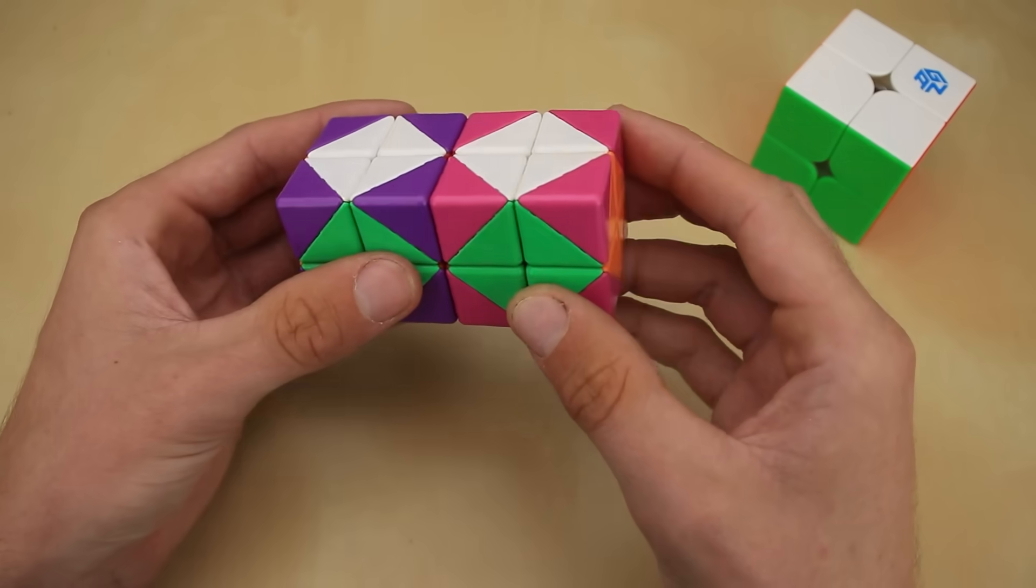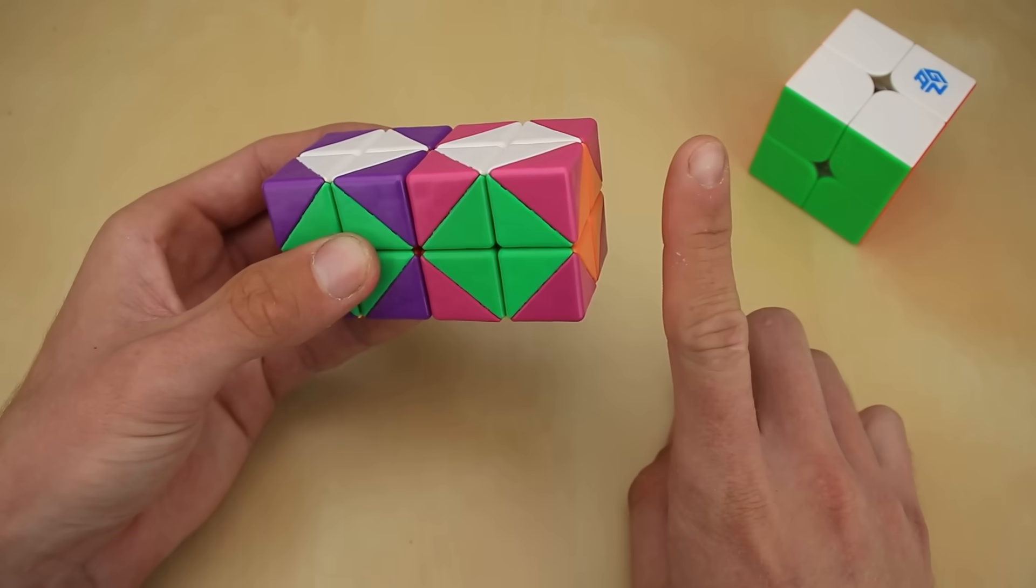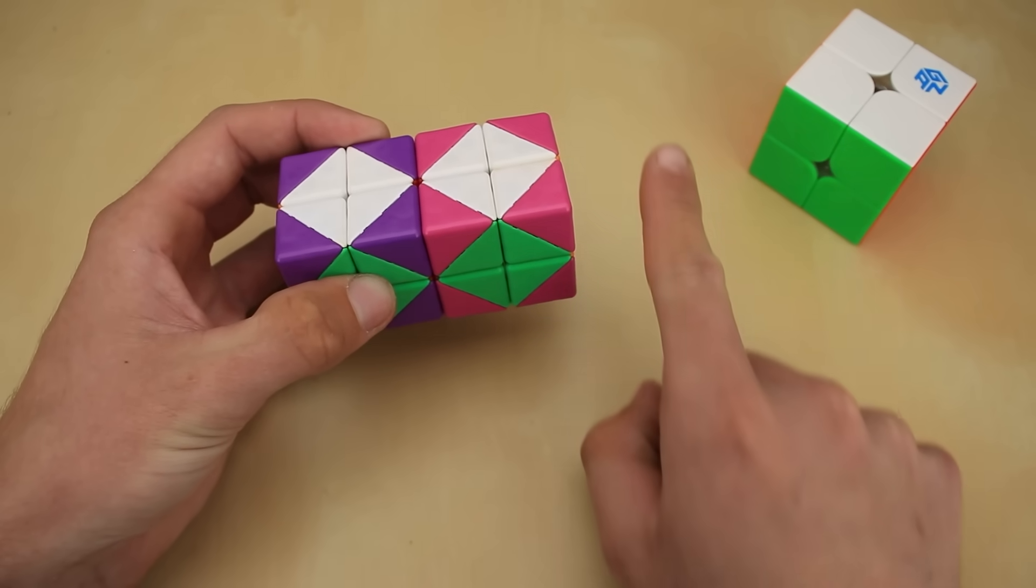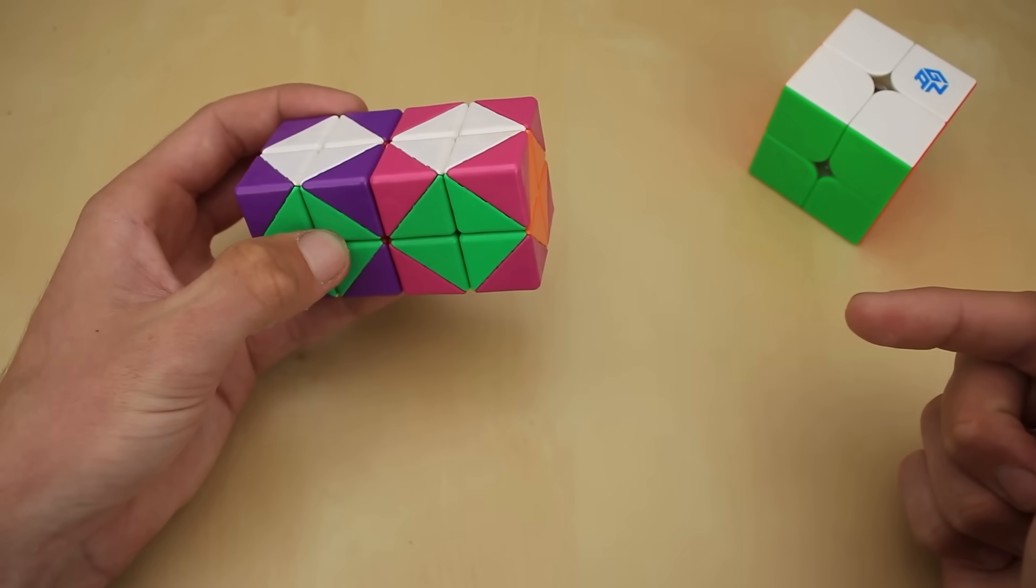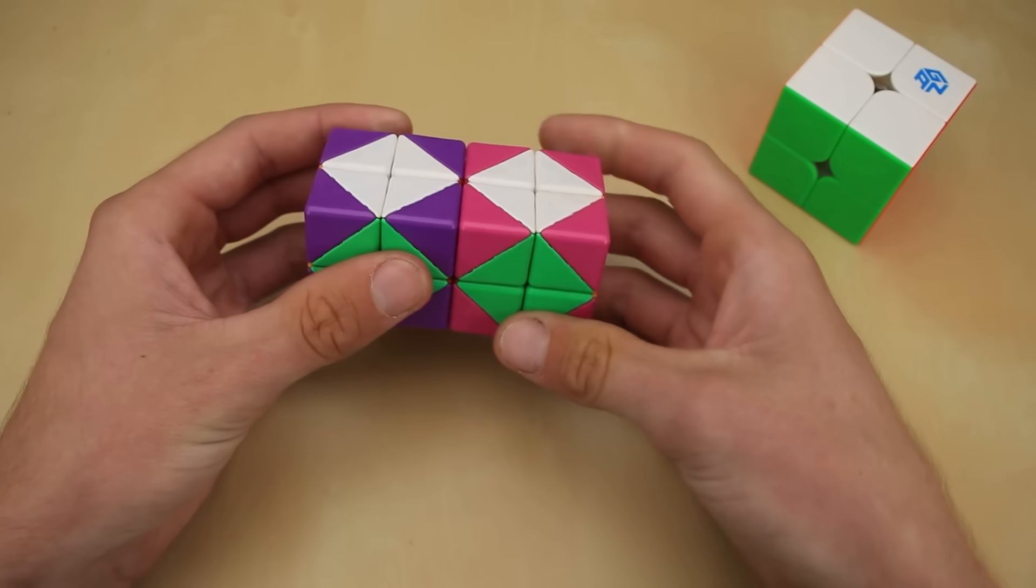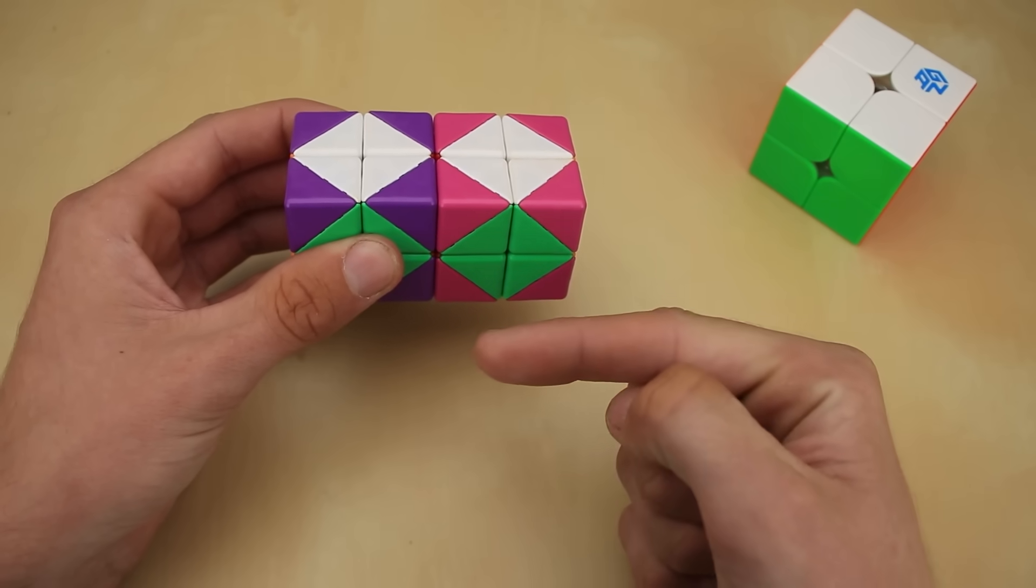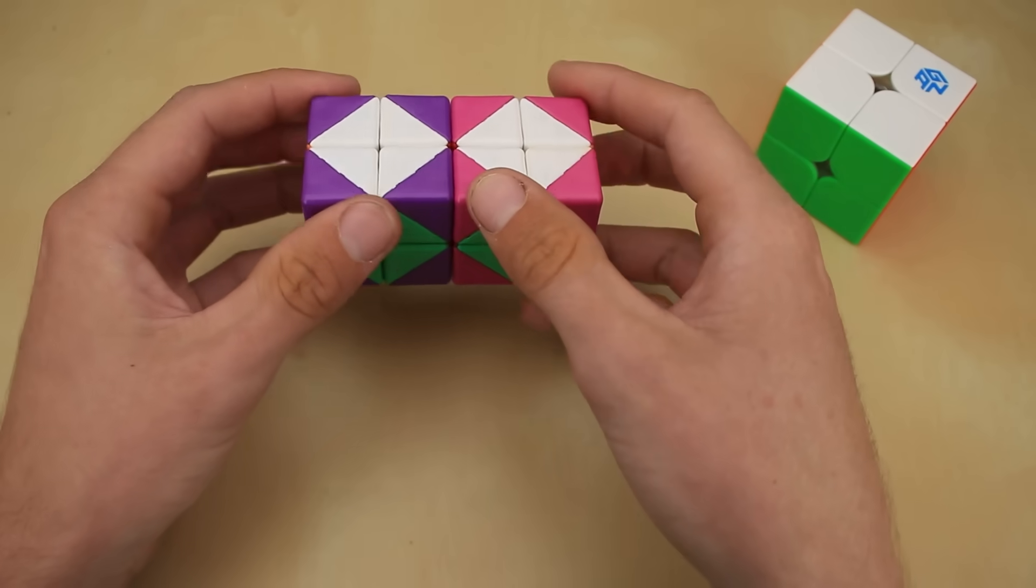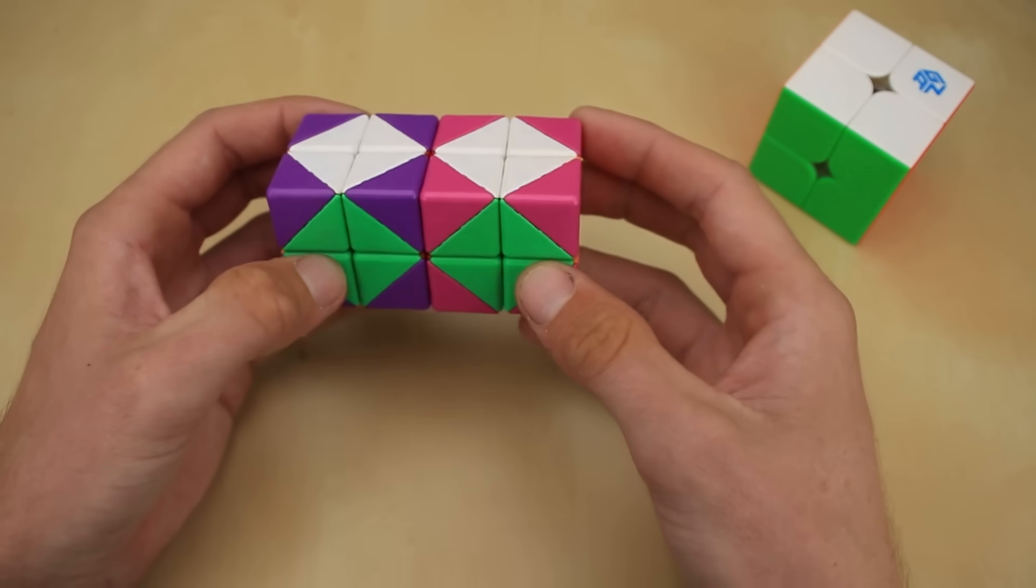So then, how about the 2x2x2x2? Well, just like before, we have our first axis with white and yellow right here, our second axis with green and blue right here, our third axis with orange and red hiding in the middle right there. But then, also in this direction, we have this extra fourth axis sort of tacked on to the outside with these pink and purple pieces.